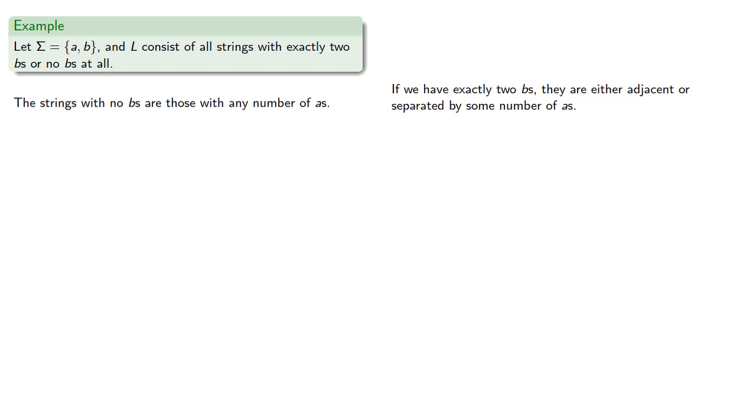Remember that in our notation, A star is any number, including zero. So these strings with two B's separated are some number of A's, followed by a B, followed by some number,